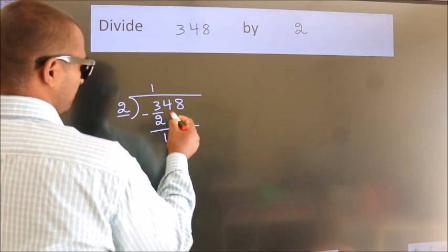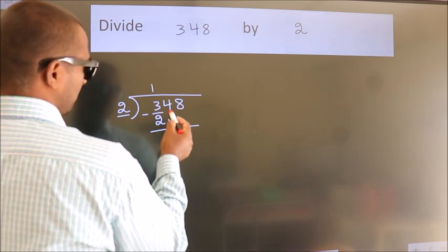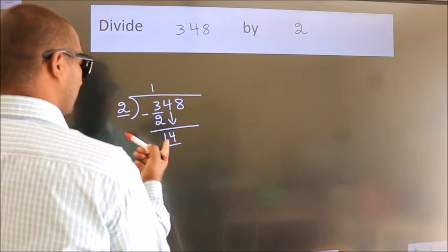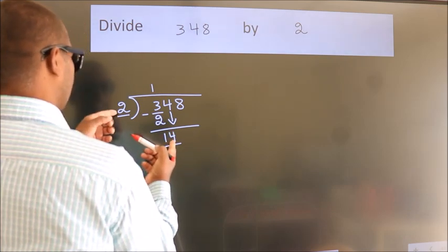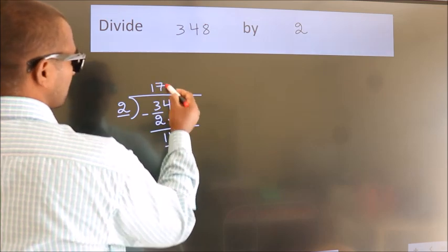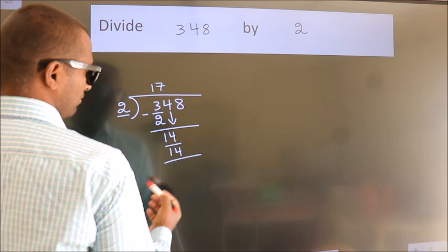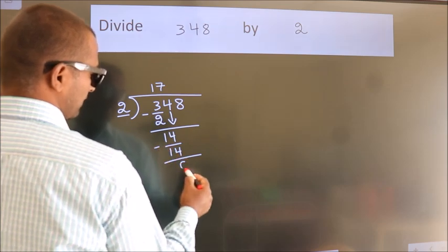After this, bring down the beside number. So 4 down. So 14. When do we get 14? In 2 table. 2 7s 14. Now we subtract. We get 0.